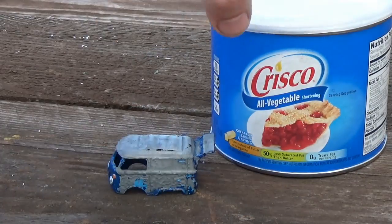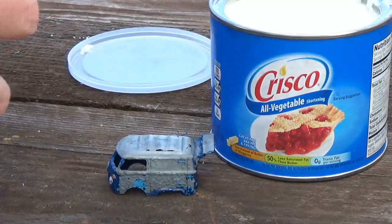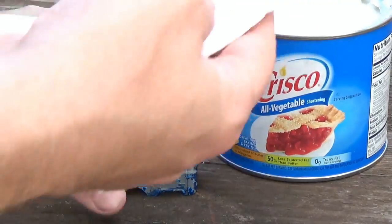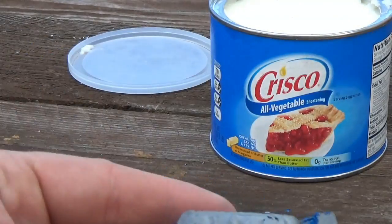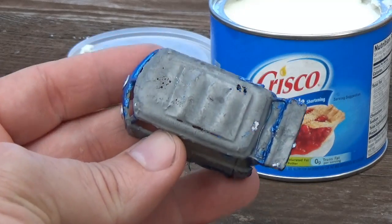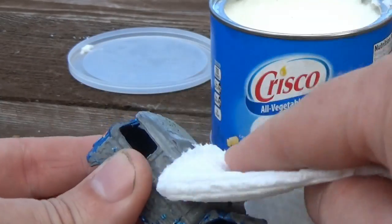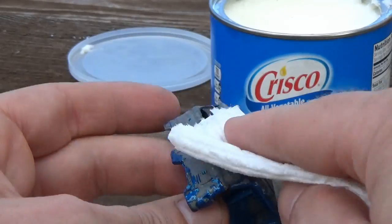So here's where things get a little bit strange, but bear with me as the results are pretty neat. I'm going to take some Crisco or vegetable shortening and wipe it all over the car. I'm not globbing it on or anything. Just a light coat is all I need.